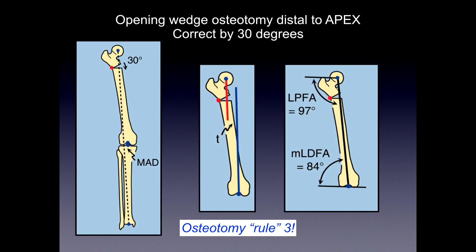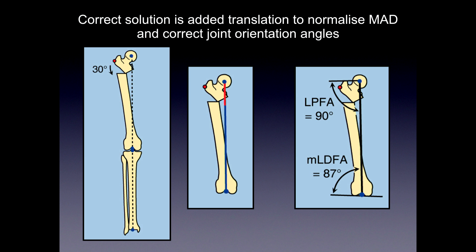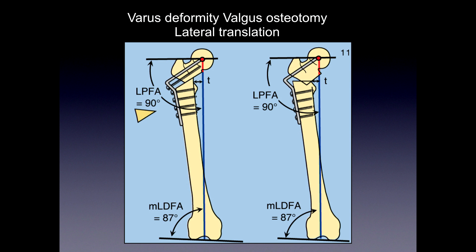If you did osteotomy rule 3 — an opening wedge osteotomy without knowing this — you get translation of your mechanical axis and still get malorientation of both the proximal and distal joints. If you overcorrect to get a normal proximal femoral angle, you still have abnormalities of both mechanical axes. More correctly, with a valgus osteotomy you want to translate laterally, because the head going more medial creates a medial mechanical axis deviation — you compensate by translating laterally in the femur. This gives some leg lengthening; if you don't want that, take the wedge out for less lengthening, but note the translation so that axis lines are realigned with normal proximal and distal joint orientation angles.